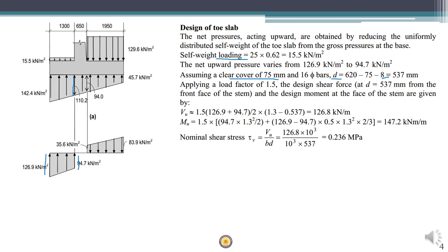We apply a load factor of 1.5 when calculating the design shear and design moment. An important point is that the critical section for toe slab in shear is at a distance D away from the face of the support. This is because of the inclined crack which develops due to the transverse compression offered by the support from the stem — the stem offers a transverse compression force, hence the crack propagates in the toe slab at a 45-degree angle. Therefore the critical section is taken at distance D from the face of the support, and we find the value of VU as the area of the trapezium.